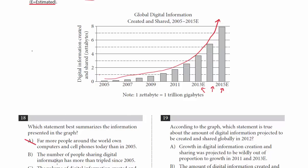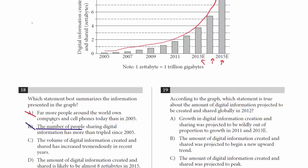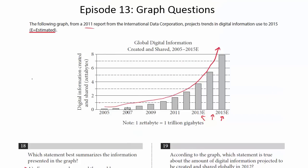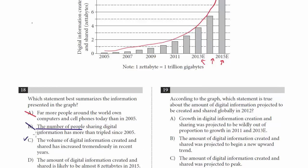Choice B: the number of people sharing digital information has tripled since 2005. Be very careful — the bars have more than tripled compared to 2005, but notice what B says: it says the number of people has tripled. This is not number of people — this is data. The graph has nothing to say about number of people. So we can get rid of B. Choice C: the volume of digital information created and shared has increased tremendously in recent years. Yes, that seems reasonable — we can see it's exploding at an exponential rate. C is consistent with the graph.